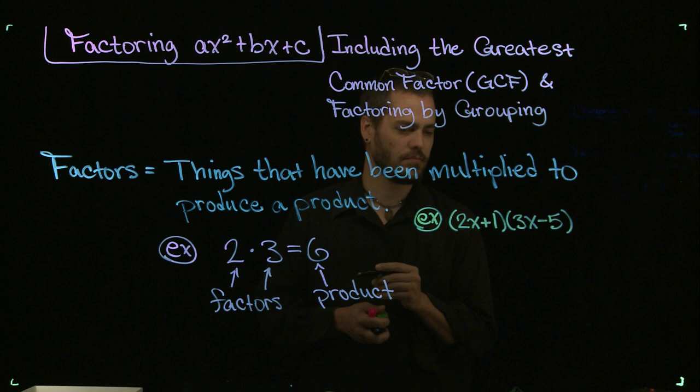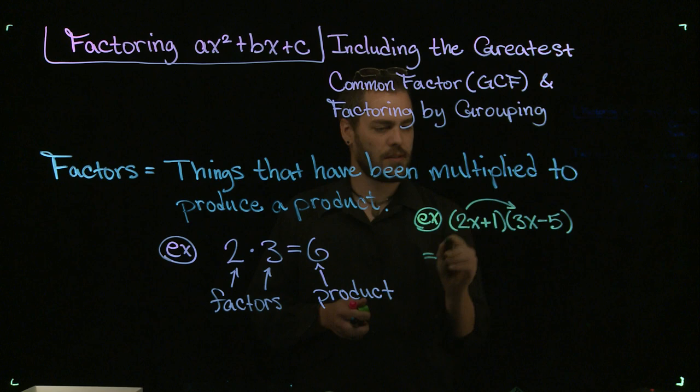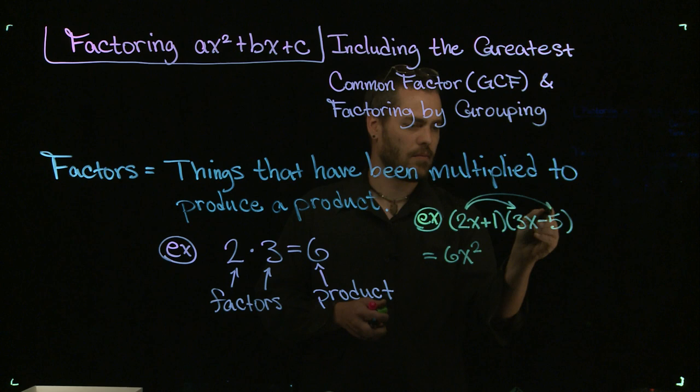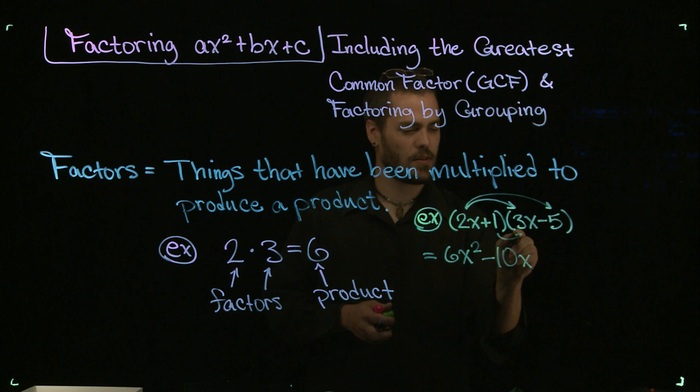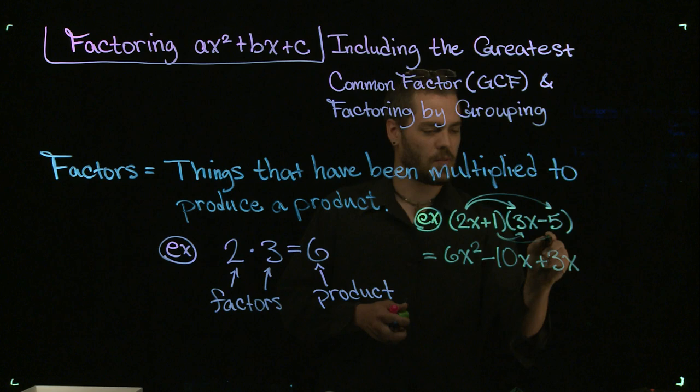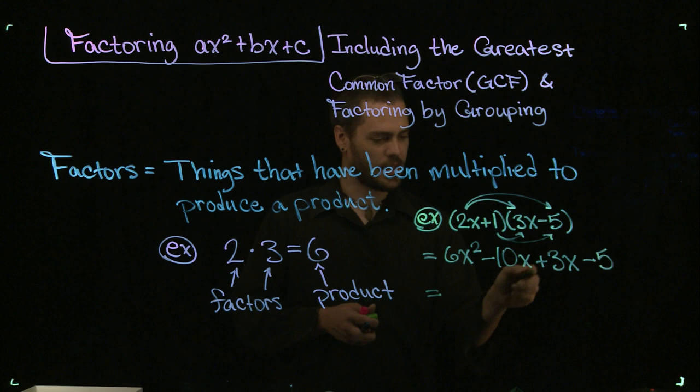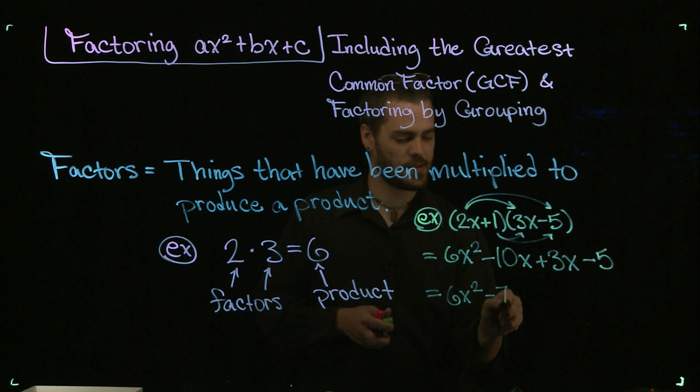When I multiply this out, I get the following: 2x times 3x is 6x², and then 2x times negative 5 is negative 10x, 1 times 3x is plus 3x, and 1 times negative 5 is negative 5. I can combine those like terms in the middle to produce 6x² minus 7x minus 5.